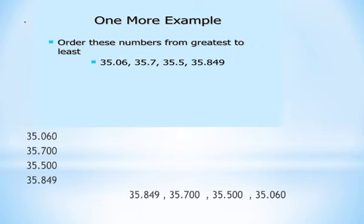You can see the decimal points lined up here. The second step: if necessary, write one or more zeros to the right of the last digit so that all the decimals have the same number of decimal digits. We put the zeros to the right of the last digit. The next step is to compare the digits from the left.